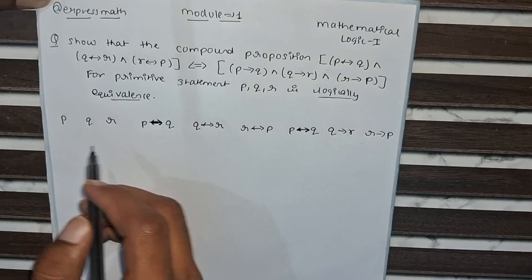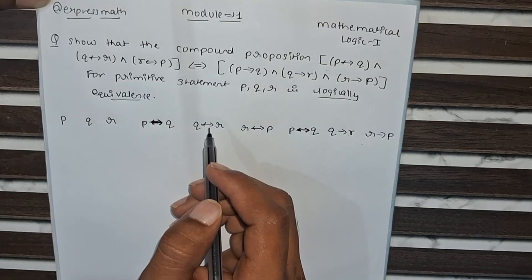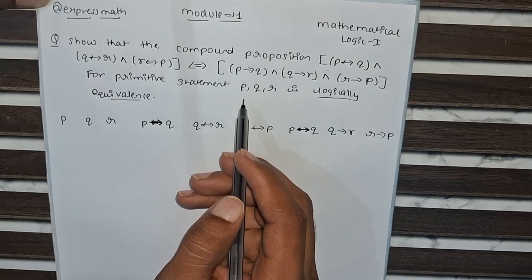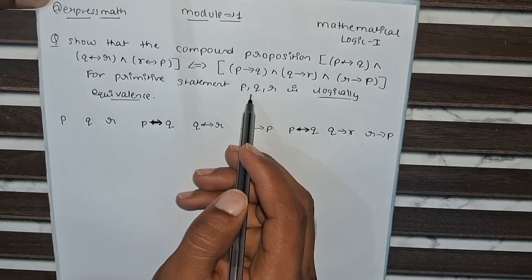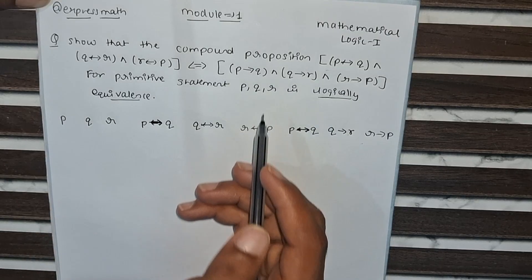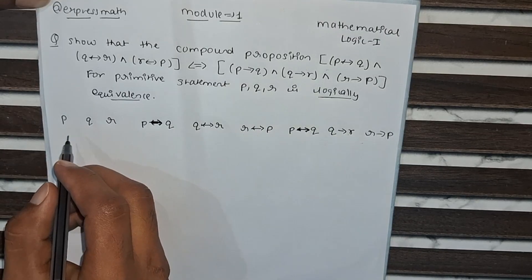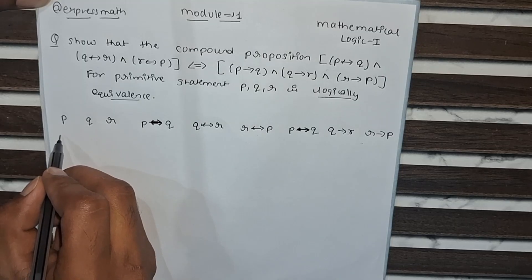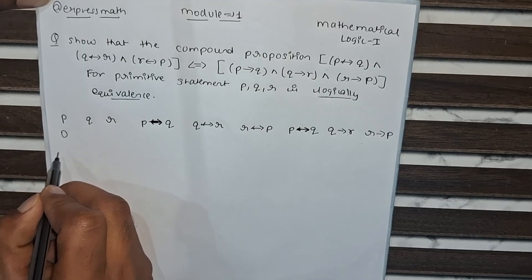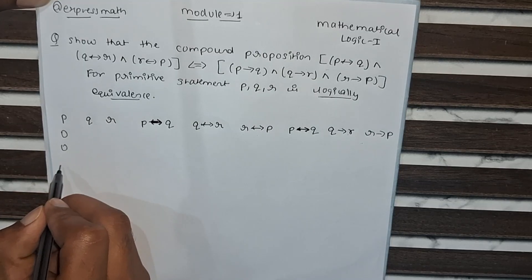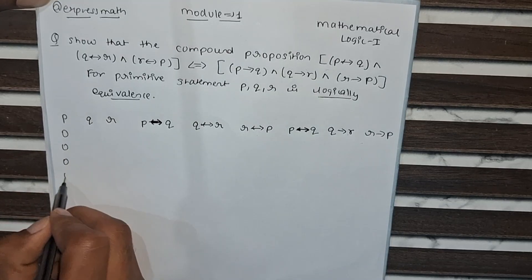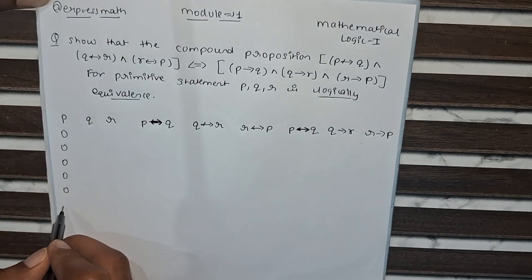How many elements are there? There are 3 elements: P, Q, and R. The truth table has 8 rows, covering all combinations of 0s and 1s for the three variables.